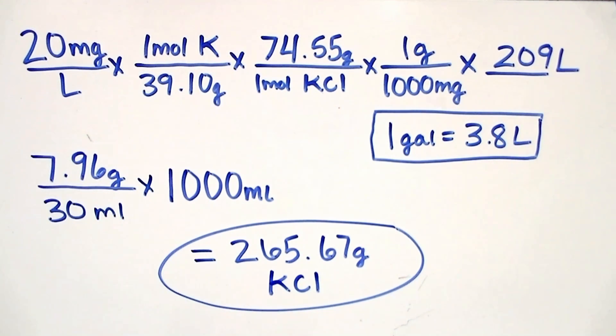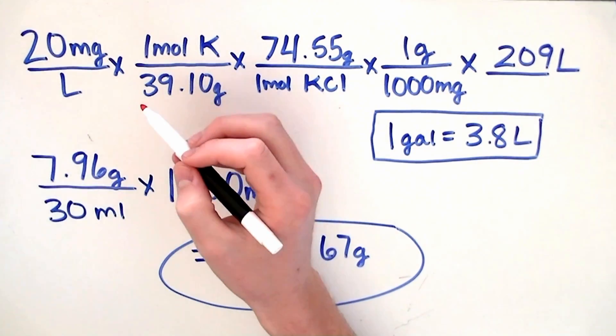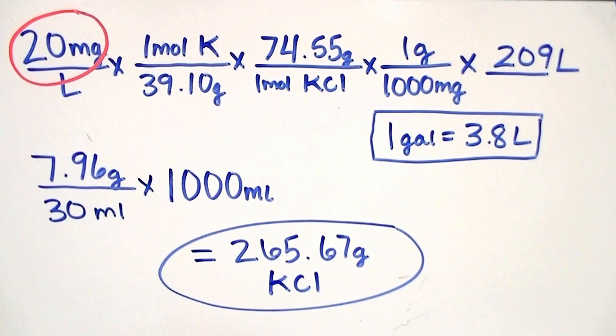Now let's talk about which numbers in this calculation are subject to change. The first one is the desired concentration. We recommend sticking with 20 milligrams per liter because it fits right in the middle of the index and because it will account for any background levels of potassium you probably have in your tank.